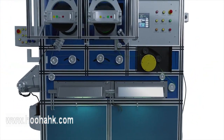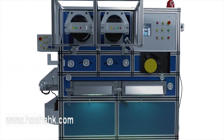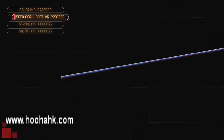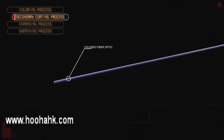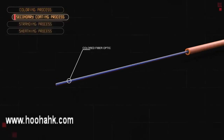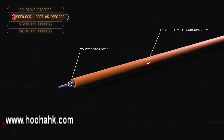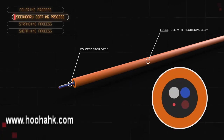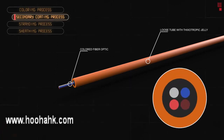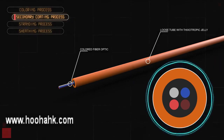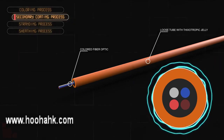Secondary coating, or buffering process, is a process where one or more optical fibers of different colors get encapsulated. Its purpose is to provide mechanical isolation and protection from physical damage.